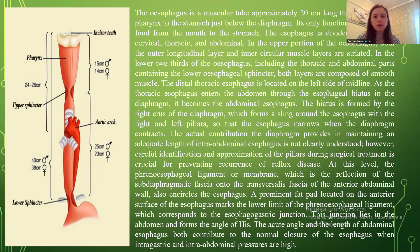The esophagus is a muscular tube approximately 20 cm long that connects the pharynx to the stomach just below the diaphragm. Its only function is to transport food from the mouth to the stomach. The esophagus is divided into three parts: cervical, thoracic, and abdominal.